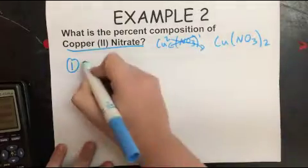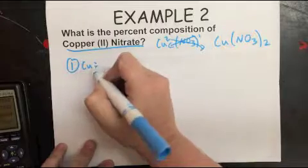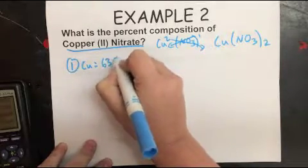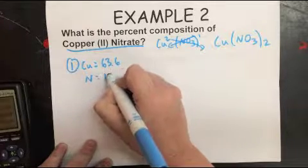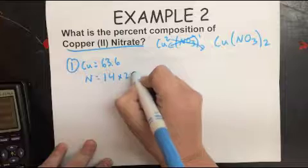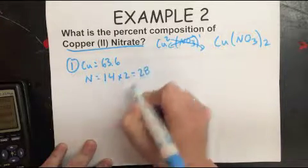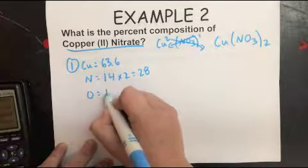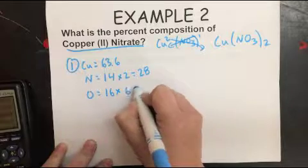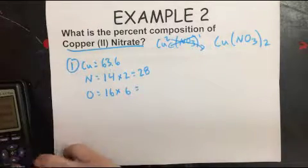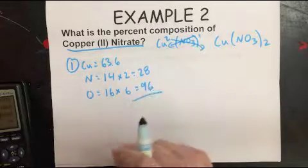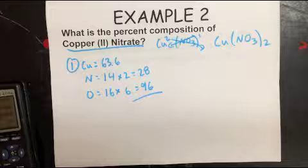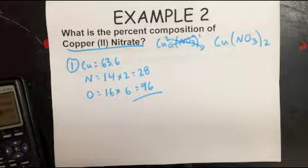find the molar mass of that compound. So copper is 63.6, there's only one of them. Nitrogen is 14 times 2 is 28. Oxygen is 16 times 6, 96. And you add them up.